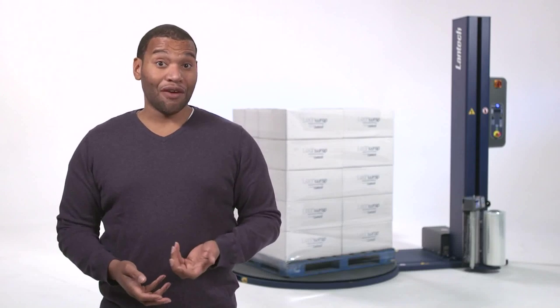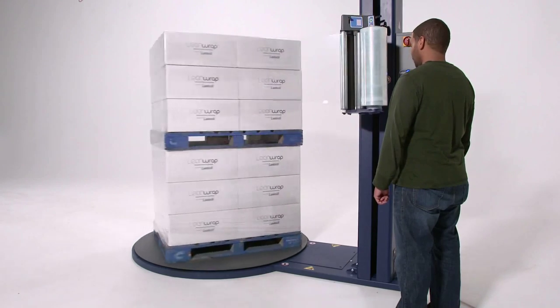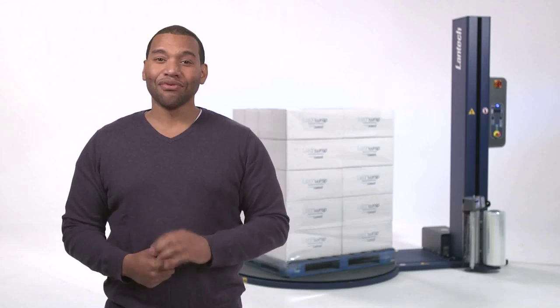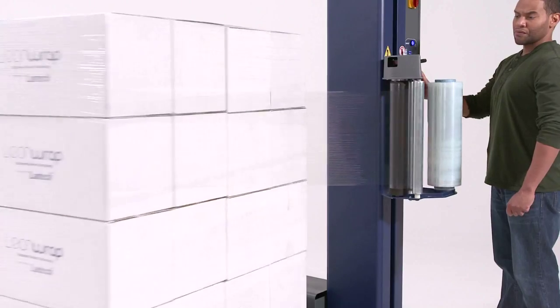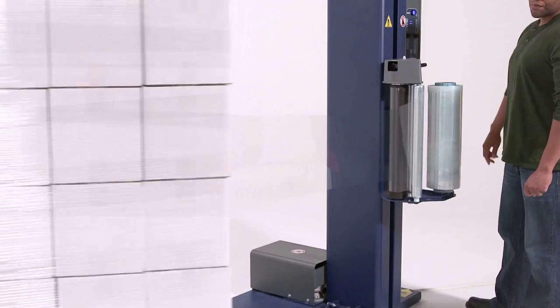If the load is not being pulled off the turntable, or if the film is not loose or sagging, then the film tension is right. As a rule, it's best to wrap the load as tight as possible, without experiencing film breaks or product damage.